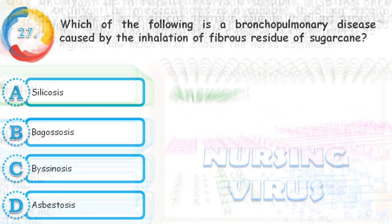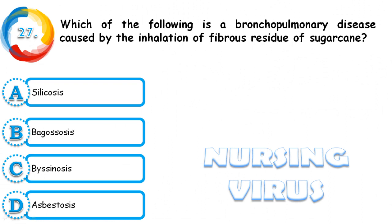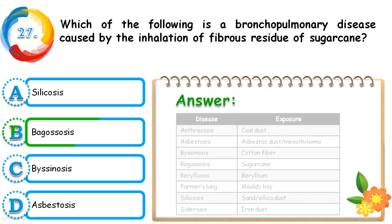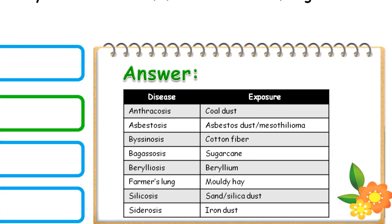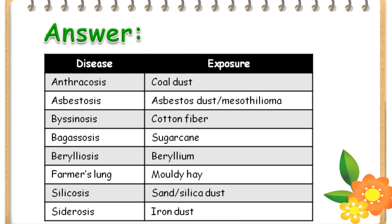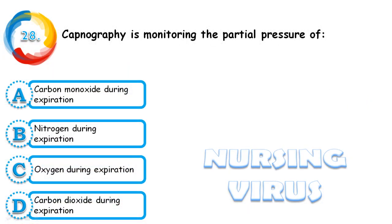Question 27: Which of the following is the broncopulmonary disease caused by the inhalation of fibrous residues of sugar cane? Options are silicosis, bagassosis, byssinosis, and asbestosis. The correct answer is bagassosis. Here is a list of various occupational disorders: anthracosis from coal dust, asbestosis from asbestos dust, mesothelioma, byssinosis from cotton fiber, bagassosis from sugar cane, berylliosis from beryllium, farmer's lung from moldy hay, silicosis from sand or silica dust, and siderosis from iron dust.